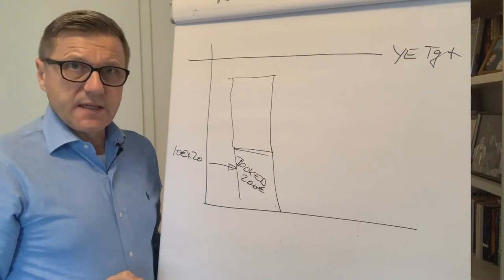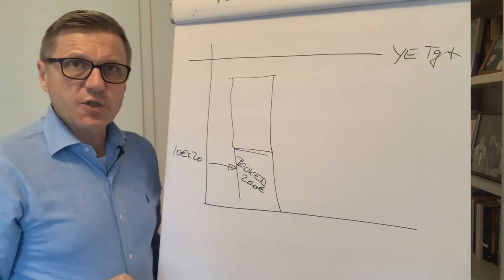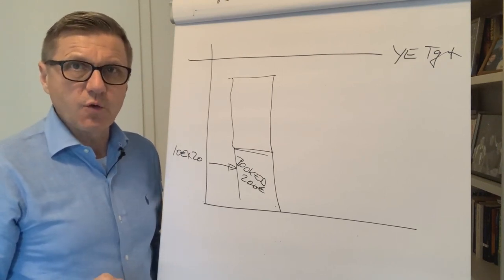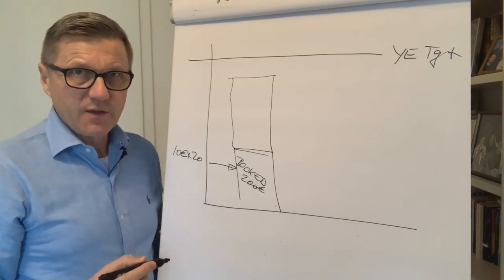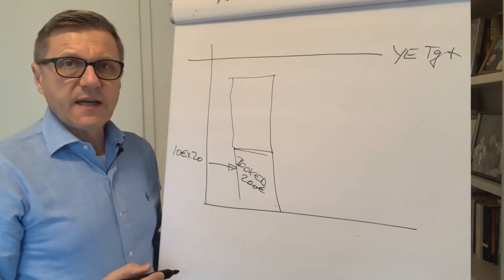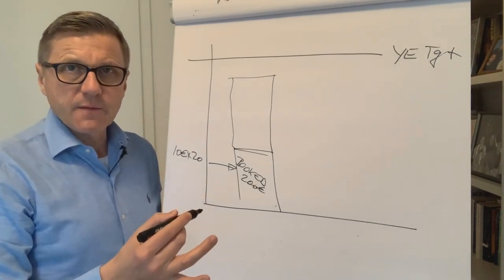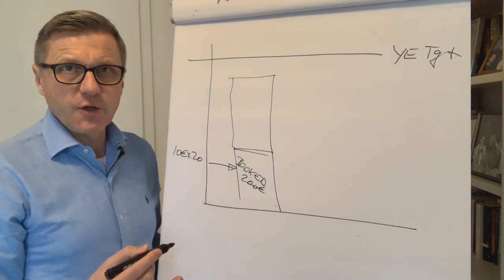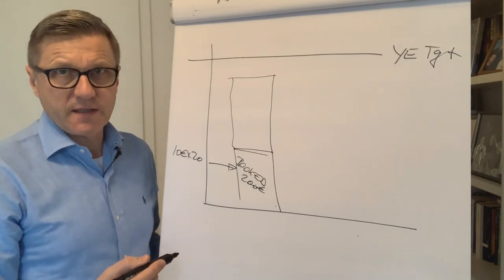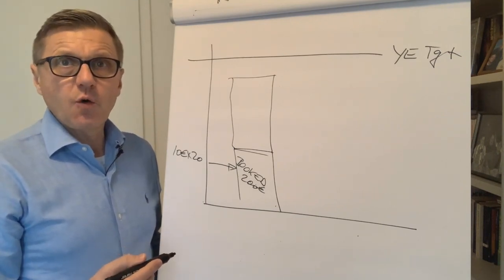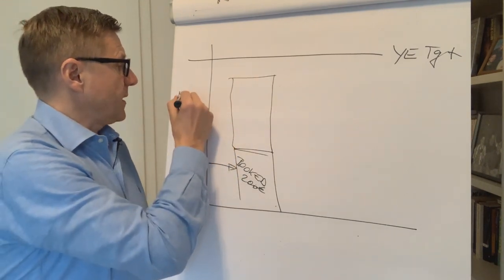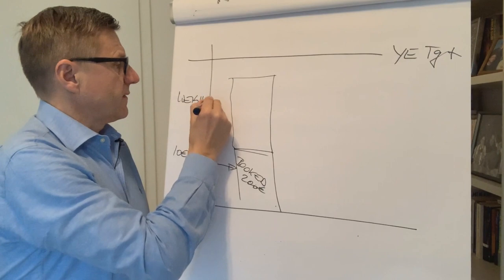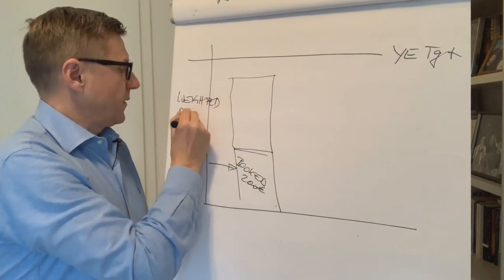Now the thing is you will have a list of all the opportunities in your pipeline and a certain percentage value, a probability of winning those, and the date when you think you can close the deal.